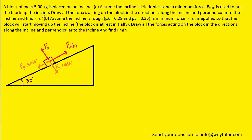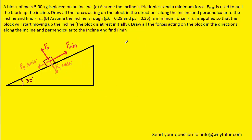We also have to calculate the value of Fmin. We look at the two forces acting along the incline: Fmin and Fg·sin(30°). Presumably the block is not accelerating up the ramp — it may be moving, but not speeding up or slowing down. Because it is not accelerating, the sum of forces along the incline must equal zero.